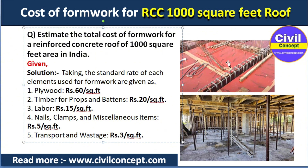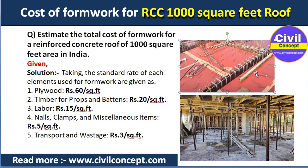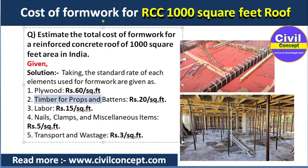Plywood is shown here in red color. For number two, timber for props and battens, the rate is 20 rupees per square feet. Props and battens — as you can see in this picture, the vertical column is known as props, which support the shuttering of the formwork, and battens are like beams.